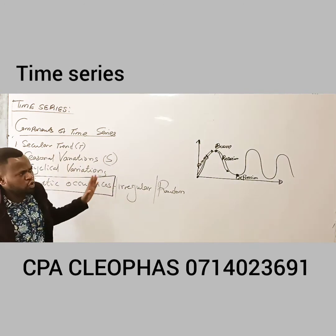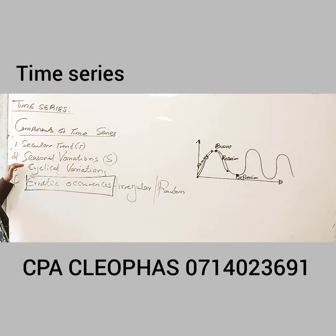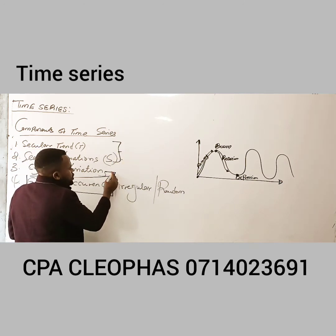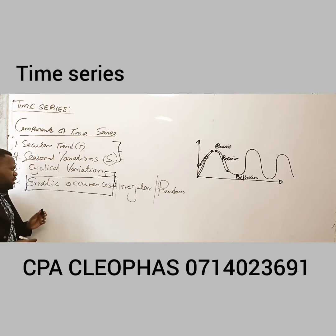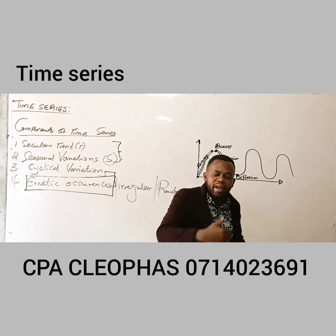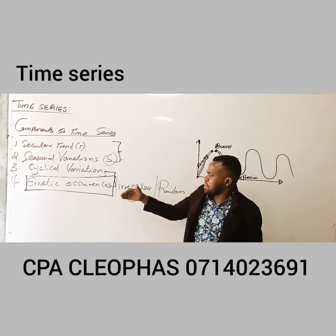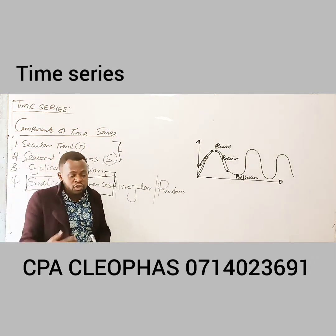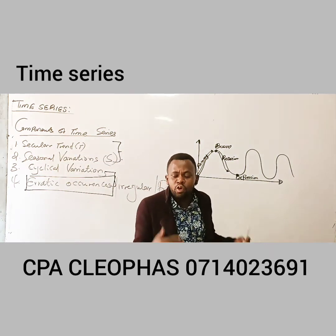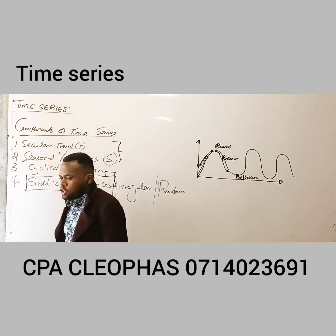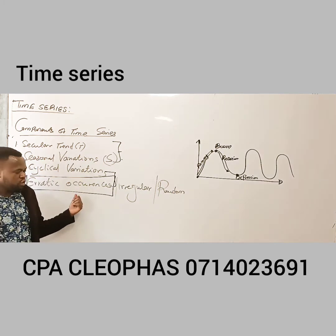So those are the four components of time series: trend, seasonal variations, cyclic variations, and erratic occurrences. When doing computations, we shall only work with trend and seasonal variations because these two are predictable. The reason we do not incorporate cyclic variations and erratic occurrences is that they are unpredictable — you cannot know when they will occur, and therefore you cannot do the workings using those components.